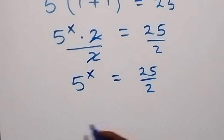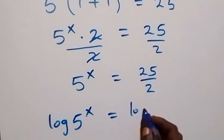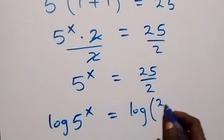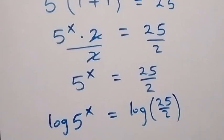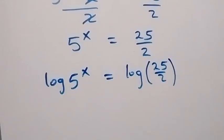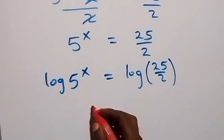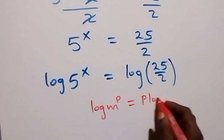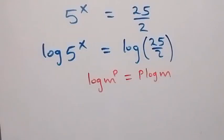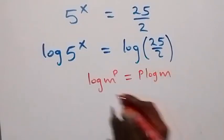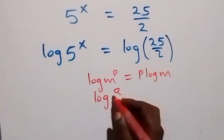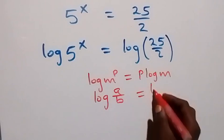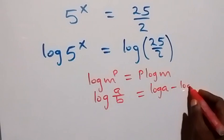Let's take the log on both sides. We have log of 5 raised to power x equals log of 25 over 2. Applying the power rule: log m raised to power p becomes p log m. And on the right side we apply the quotient rule: log(a/b) equals log a minus log b.